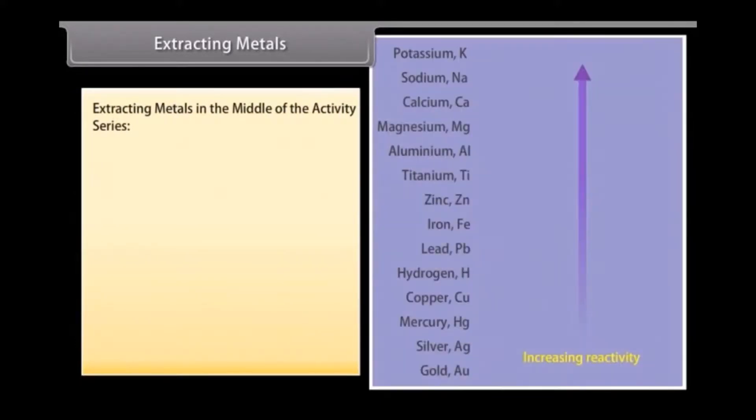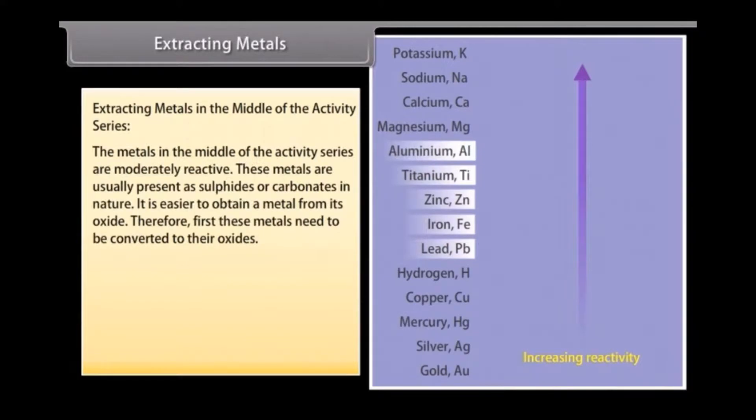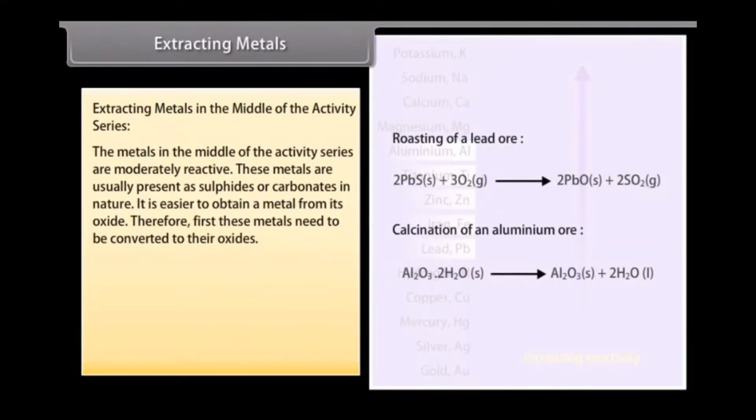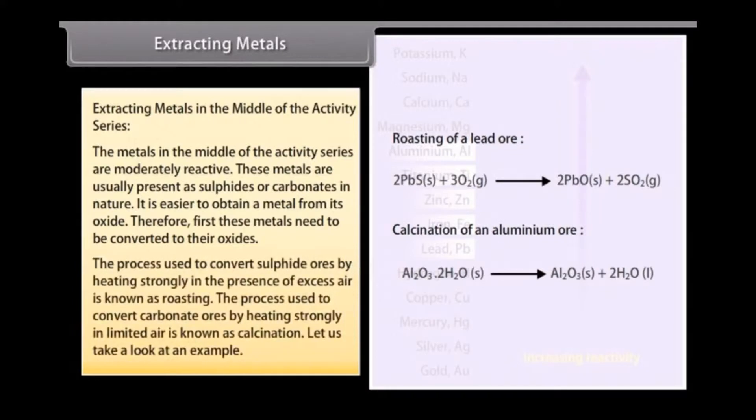Extracting Metals in the Middle of the Activity Series: The metals in the middle of the activity series are moderately reactive. These metals are usually present as sulfides or carbonates in nature. It is easier to obtain a metal from its oxide. Therefore, first these metals need to be converted to their oxides. The process used to convert sulfide ores by heating strongly in the presence of excess air is known as roasting. The process used to convert carbonate ores by heating strongly in limited air is known as calcination.